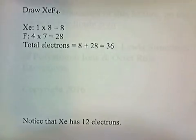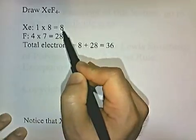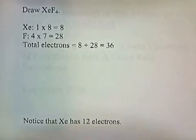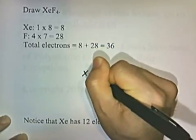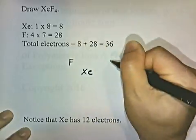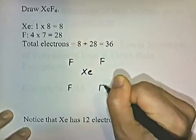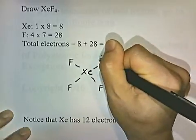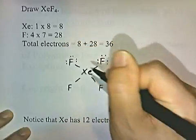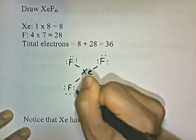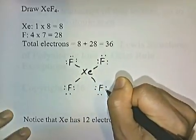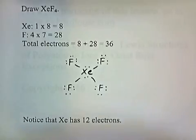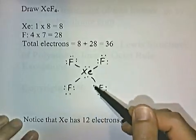Draw xenon tetrafluoride, XeF4. Xenon is a group 8 noble gas contributing 8 electrons. Four fluorines each contribute 7 electrons, giving 28. Total electrons to distribute: 36. Placing the fluorines at the corners of a square around xenon and distributing 36 electrons — 2, 4, 6, 8, 10, 12, 14, 16, 18, 20, 22, 24, 26, 28, 30, 32, 34, 36. All 36 electrons are distributed, and xenon now has 12 electrons around it.